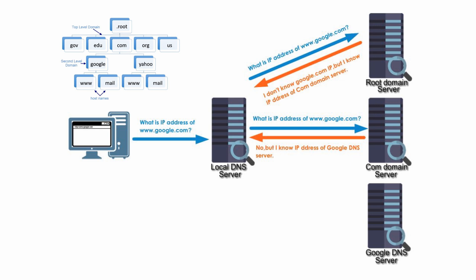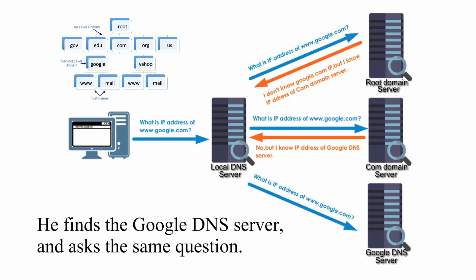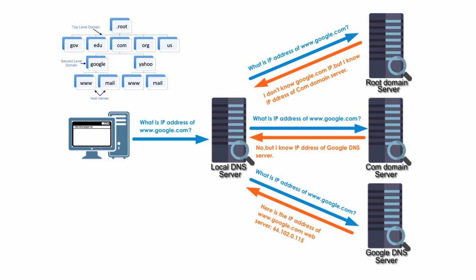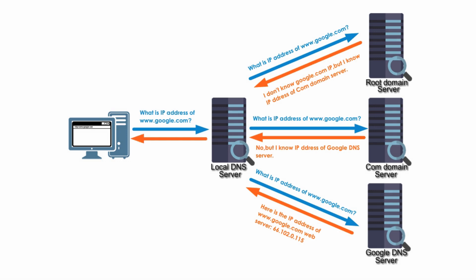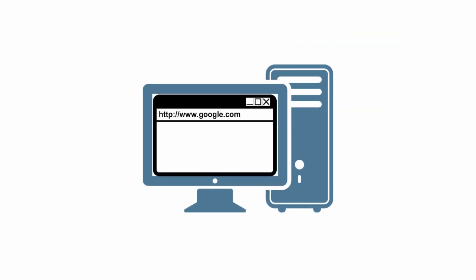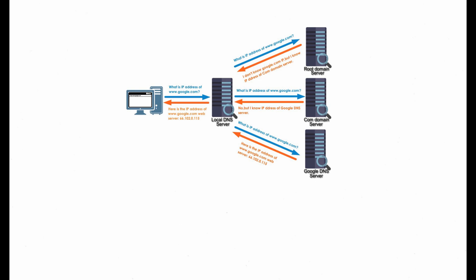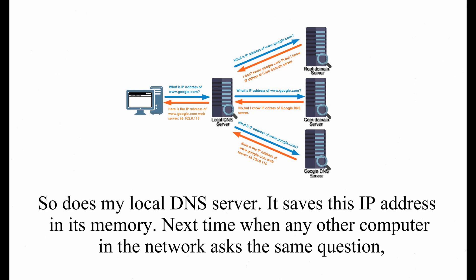Well, my local DNS server never gives up. It finds the Google DNS server and asks the exact same question: Do you know the IP address of www.google.com? This time the answer is yes, because the Google DNS server should know any Google host IP address. Its response is: here's an IP address you can use. Once my local DNS server gets the IP address, it informs my computer, which will use this IP address to talk to the Google web server. At the same time, my computer saves this IP address in its cache memory, just in case it will use it again. So does my local DNS server — it saves this IP address in its memory.